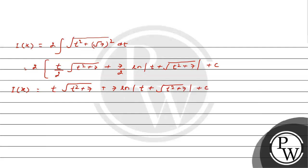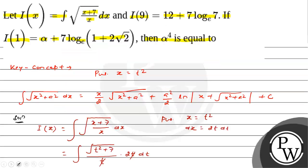Putting the value of t as √x, we get √x × √(x + 7) plus 7 ln|√x + √(x + 7)| plus C. According to the question, it is given that I(9) equals...